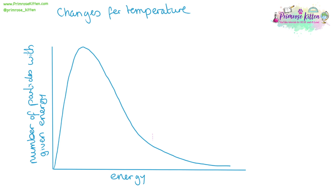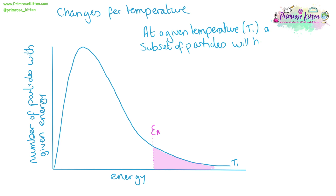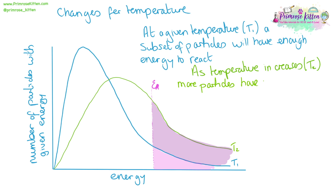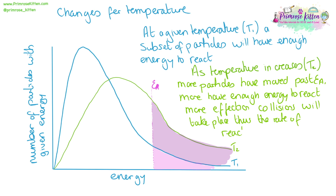There are a number of changes that take place to the shape of the Maxwell distribution graph when we change the temperature. At our initial temperature T1, the particles in pink are the particles that have passed the activation energy — these are the ones that have enough energy to react. When we increase the temperature, we show this by drawing a different line on the graph for the increased temperature T2. The activation energy stays the same, but the number of particles that have now passed the activation energy has increased, so at T2 more particles have enough energy to have an effective reaction. The more effective collisions that take place, the higher the rate of reaction.